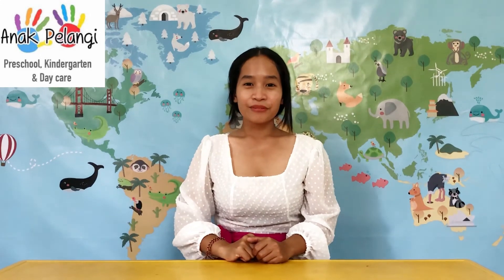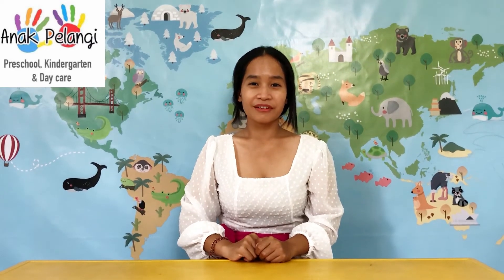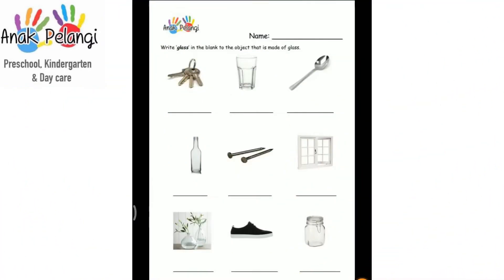In the next video, I am going to show you how to do the activity at home. Are you guys ready? Check the video out. Write glass in the blank next to the object that is made of glass.